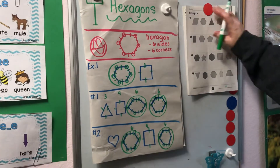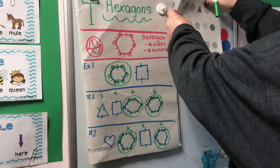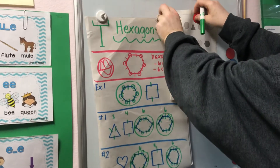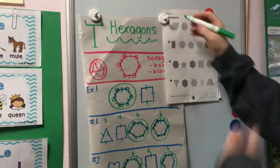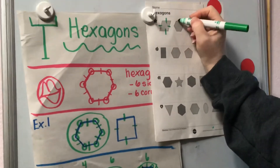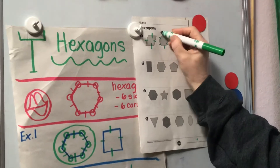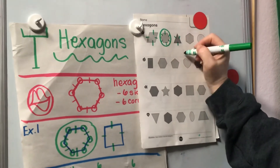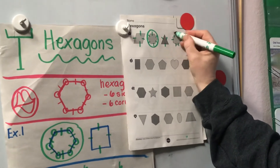Now I'm going to have you look at this next paper. On this paper, can you see it alright? We're going to look for hexagons. I'm going to have you draw the lines. That's four. One, two, three, four, five, six — hexagon. One, two, three. One, two, three, four, five, six — hexagon.